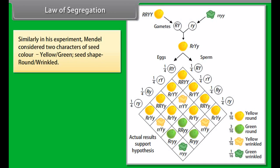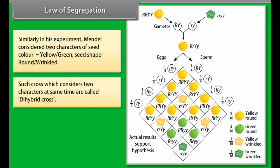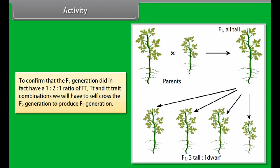Law of dominance: Mendel said that out of two contrasting characters in the progeny, only one character is expressed in the F1 generation. The character which is expressed in F1 generation — that is, tall — is called the dominant character, while the character which is not expressed in F1 generation — that is, dwarf — is called the recessive character.